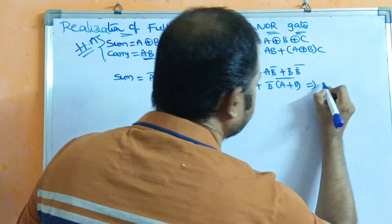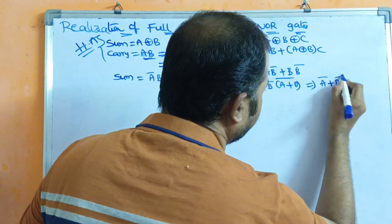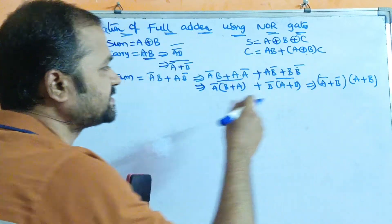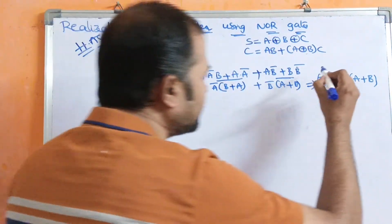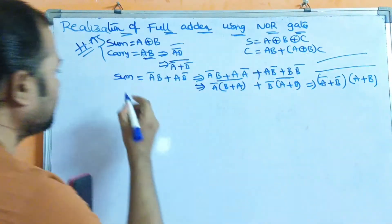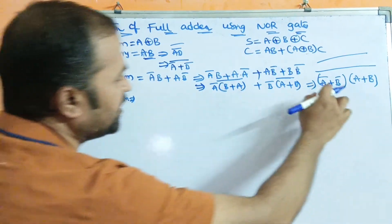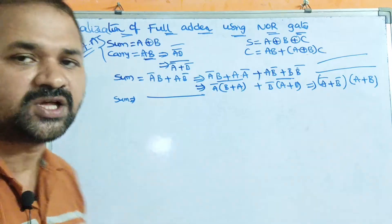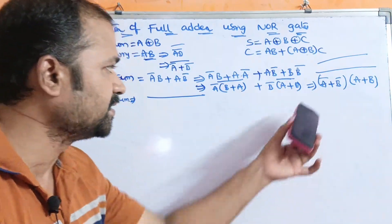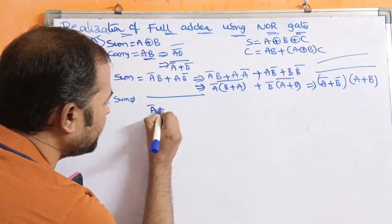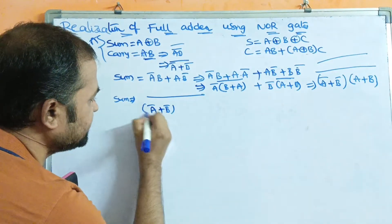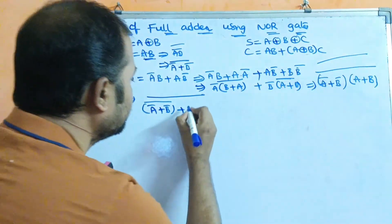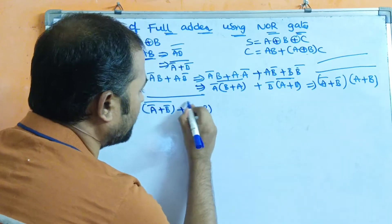So here we have two terms. The first term is Ā(B + A), which gives us (Ā + B̄). The second term is B̄(A + B), which gives us (A + B). We can write the first term as Ābar whole bar, and the second term similarly. This is in the form of (AB)̄, and the formula for (AB)̄ is Ā + B̄. So we have (Ā + B̄) combined with (A + B)̄.